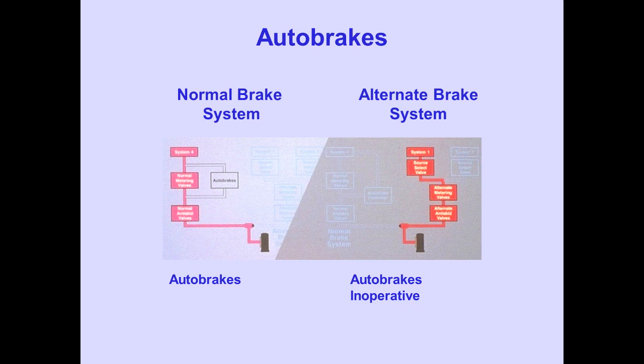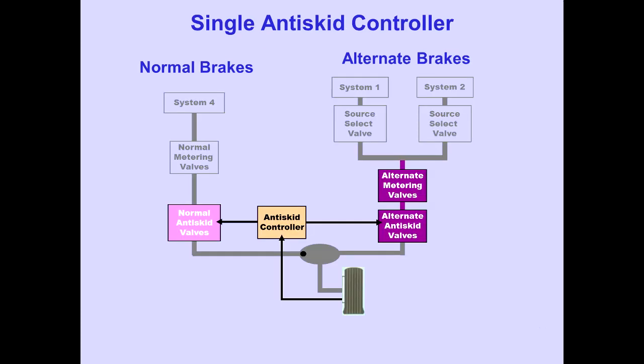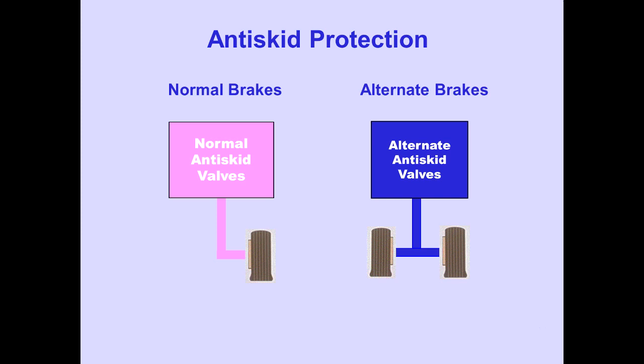Recall that auto brakes are powered only from the normal brake system. When the alternate brake system is activated, auto brakes are inoperative. A single anti-skid controller controls both the normal and alternate anti-skid valves. Recall each main gear wheel has anti-skid protection when normal brakes are operative. During alternate brake operation, anti-skid protection is provided to wheel pairs on the same axle.